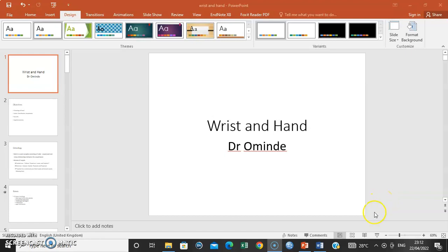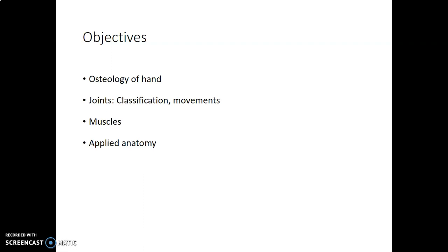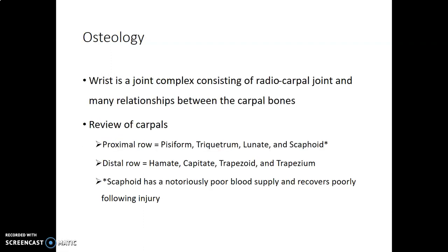Hello, my name is Dr. Omide and in this series we are going to discuss the gross anatomy of the wrist and the hand. The objectives are the osteology, the joints, muscles and aspects of applied anatomy.